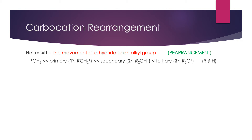There is something called a carbocation rearrangement, which represents one of the other organic reaction steps. The net result is the movement of a hydride or an alkyl group within a carbocation species. A hydride is a negatively charged hydrogen ion, H-minus. What happens is that an H attached to a carbon will move along with its bonding electrons to the carbon carrying the positive charge in the carbocation. This can also happen with a carbon group, though it's more common for hydrogen to do this.